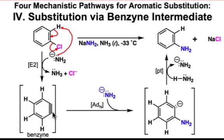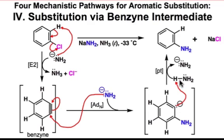The carbon-carbon triple bond is highly strained and it's a very weak π bond capable of undergoing nucleophile addition. That creates an anionic intermediate which acts as a strong base to pick up a proton — the proton comes from the molecule of ammonia that was created in the E2 elimination step. That puts a proton in that position, and overall we've done a net substitution of an amino group for a chloride through a benzyne intermediate.